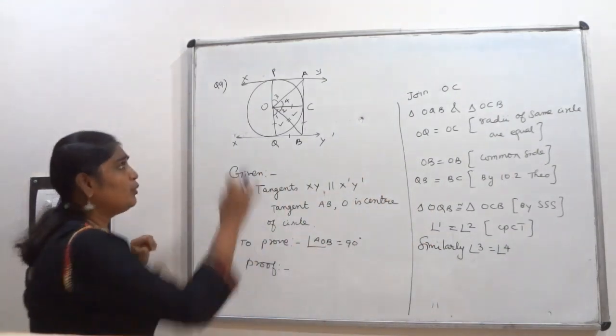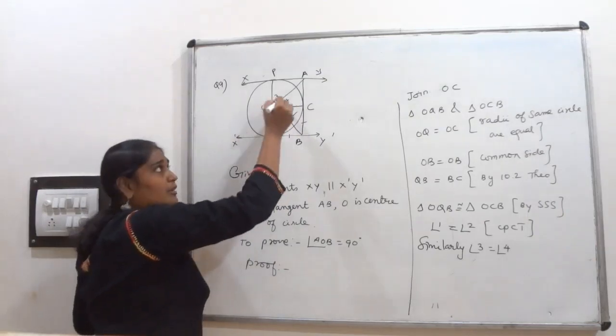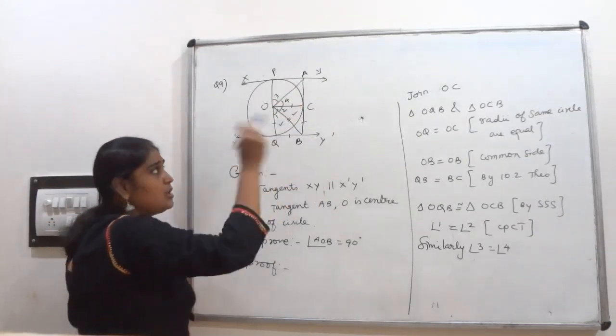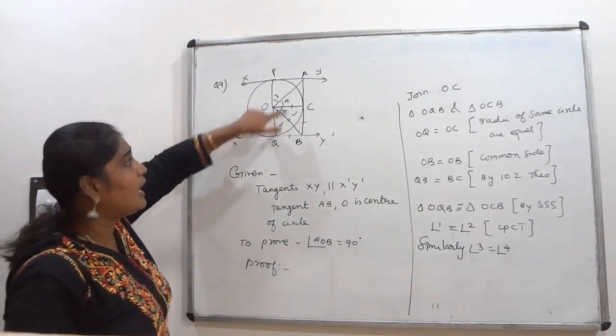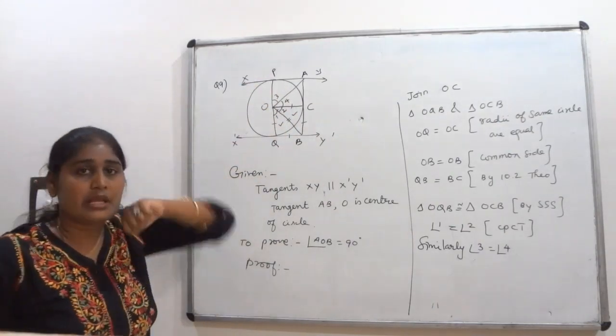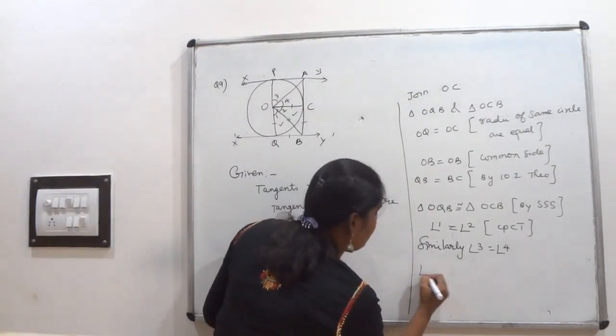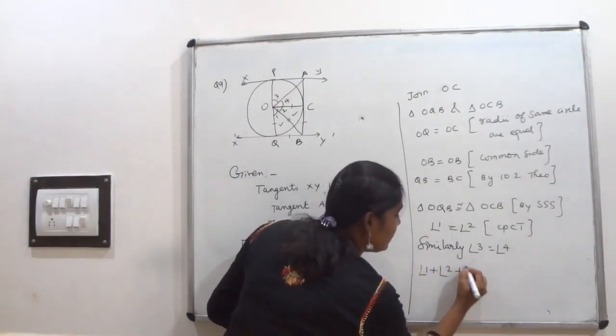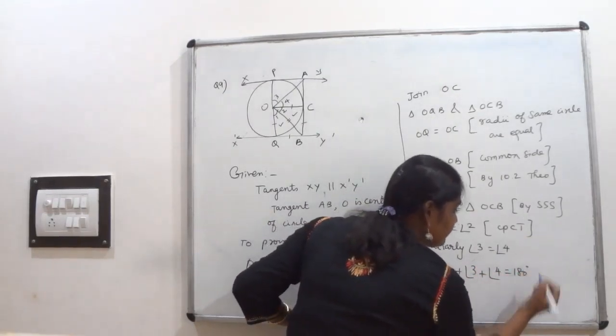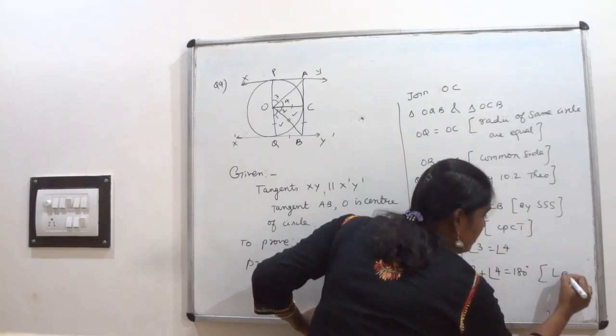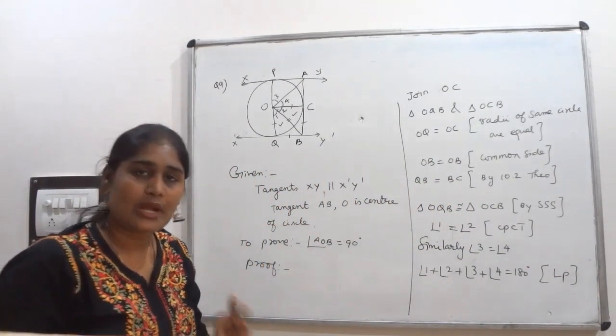I have to prove that only angle AOB is 90 degrees. I need only angle 2 and angle 4. That will give you angle AOB. So I am taking these all angles. Sum of all the angles on a straight line is equal to 180 degrees. Angle 1 plus angle 2 plus angle 3 plus angle 4 equal to 180 degrees by linear pair, or you can write sum of all angles on a straight line is 180.